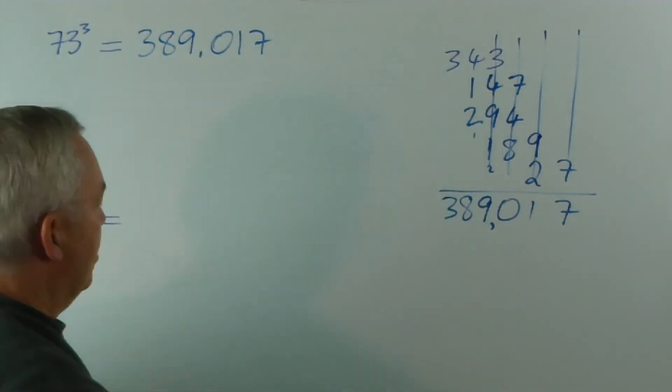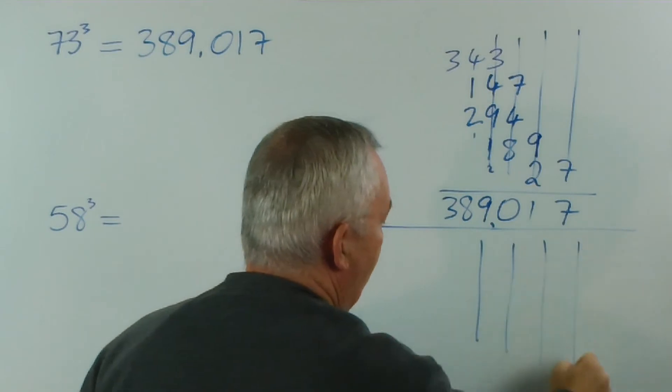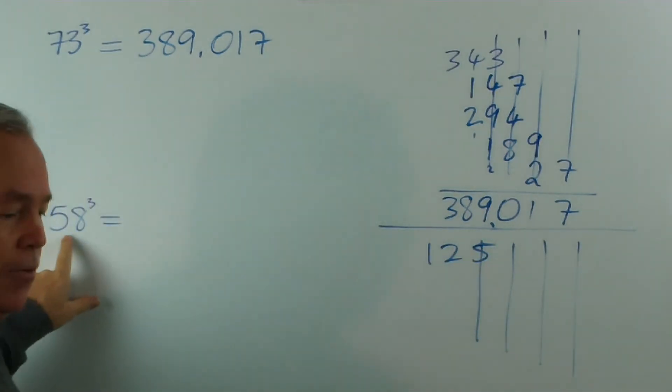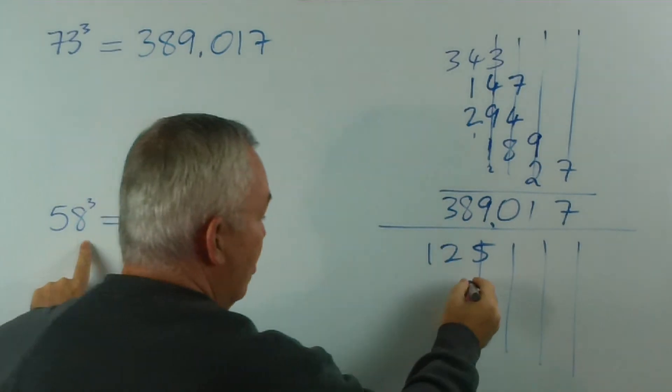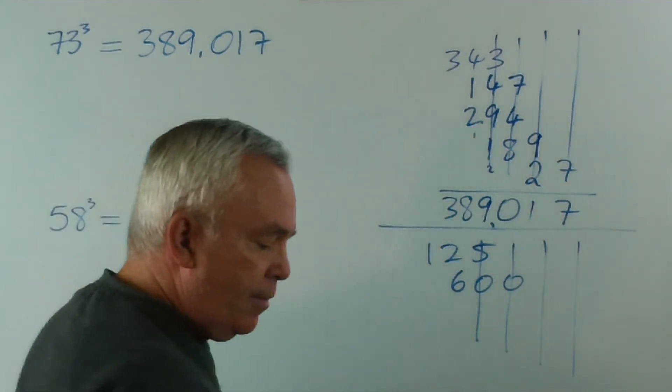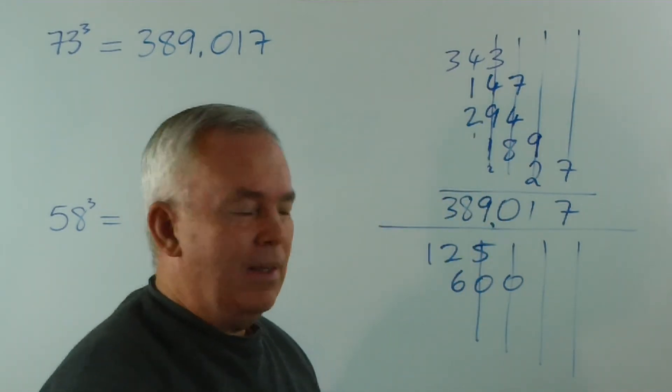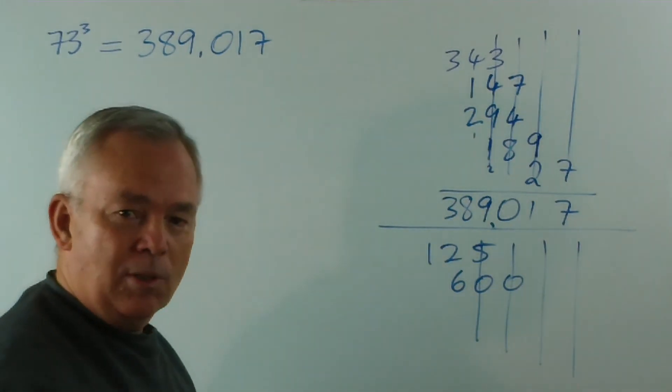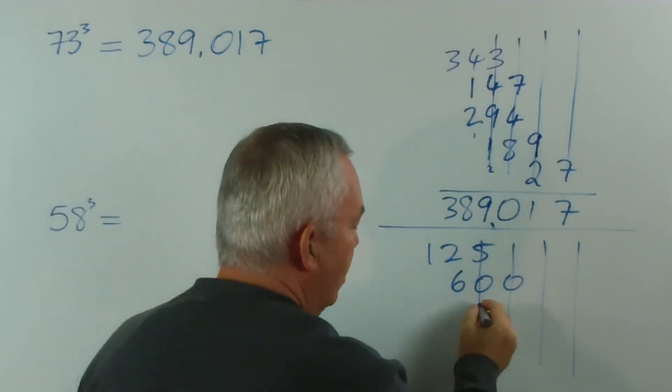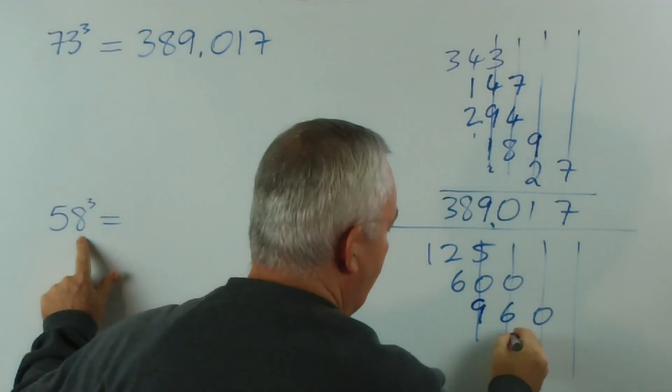Now, we've probably got just enough room to do 58, to calculate 58 cubed here. So, again, four columns. What is five cubed? It's 125. Five squared is 25 times eight. Well, that's 200. And that's easy to triple. Then we do five times eight squared. Now, eight squared is 64. And five sixty-fours, a bit of a shortcut for multiplying by five, you divide by two and multiply by 10. So, half of 64 is 32, so it's 320. And tripling 320 gives us 960. And eight cubed is 512.